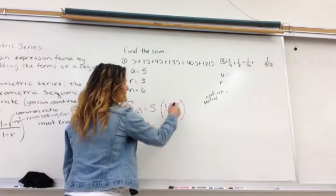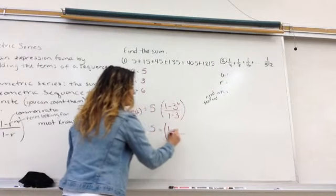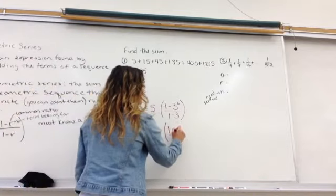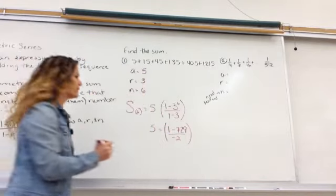Now, 1 minus, or 3 to the 6th, that's 1 minus a big number. On the bottom I know it's negative 2. The top, you have to punch it into your calculator, and that's 729. And I'm going to take 1 from it.